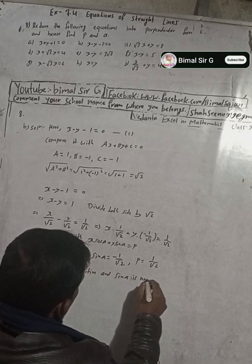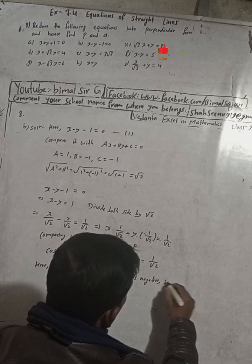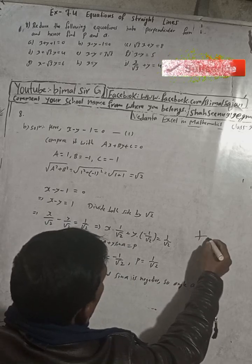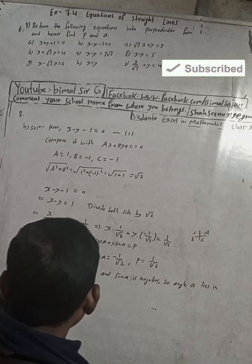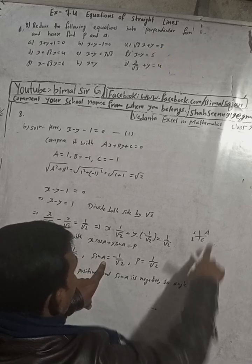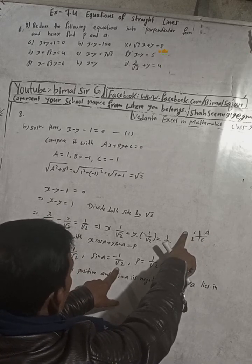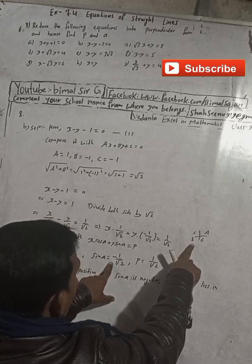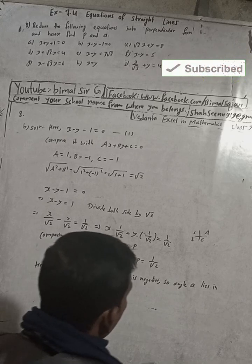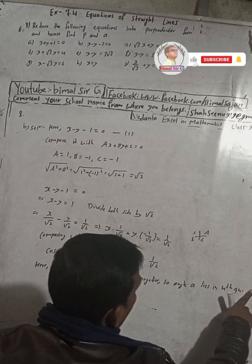Since cosα is positive and sinα is negative, using the CASTLES rule we determine which quadrant angle α lies in. In the fourth quadrant, cosine is positive and sine is negative, so angle α lies in the fourth quadrant.